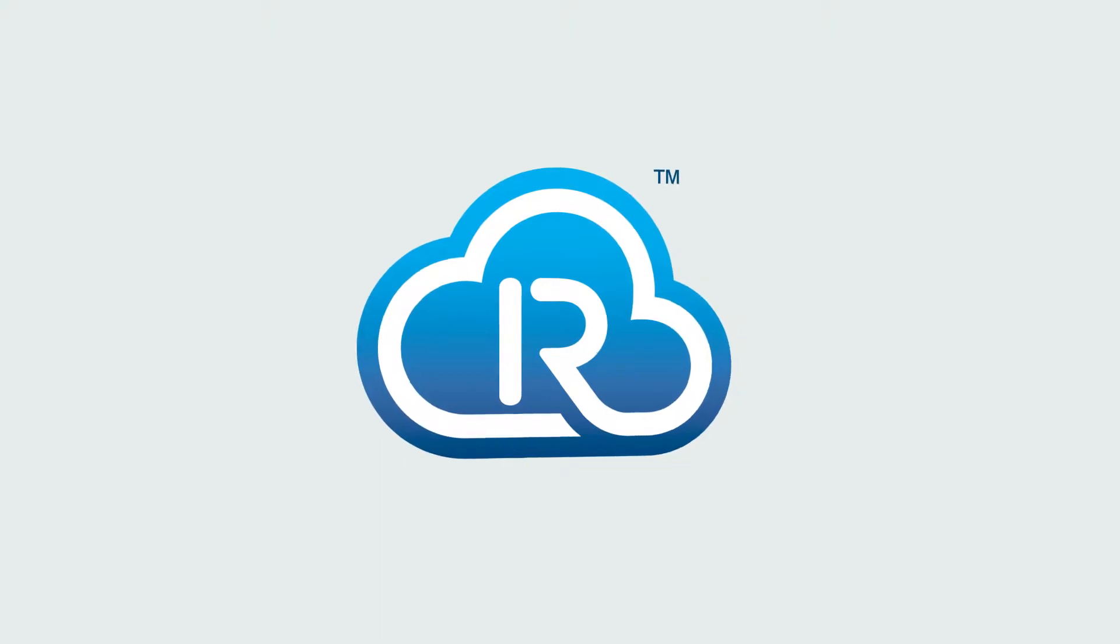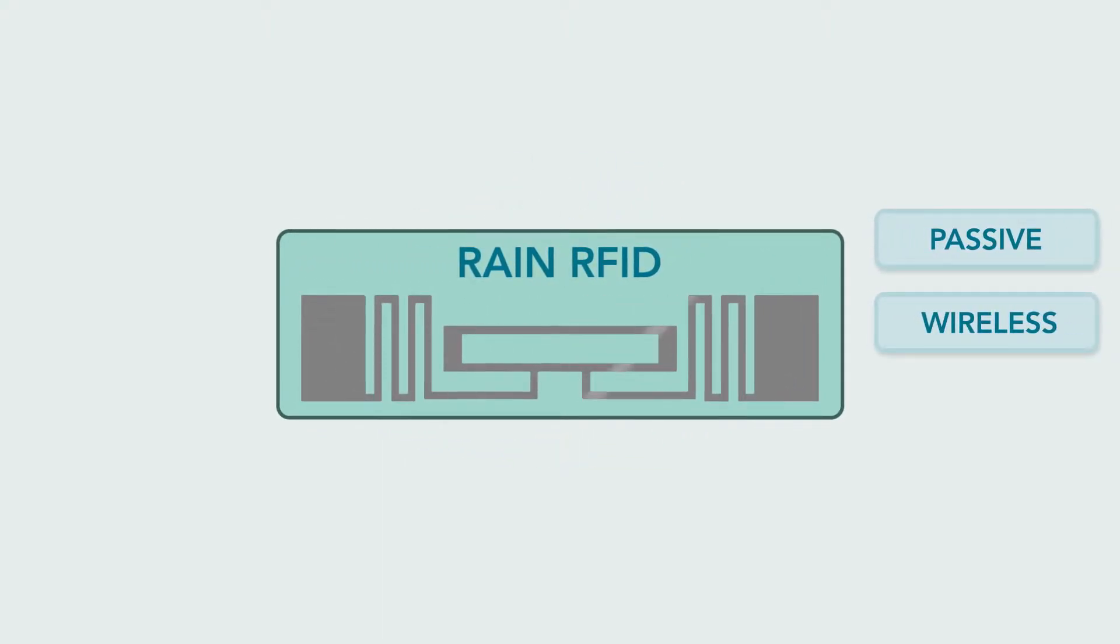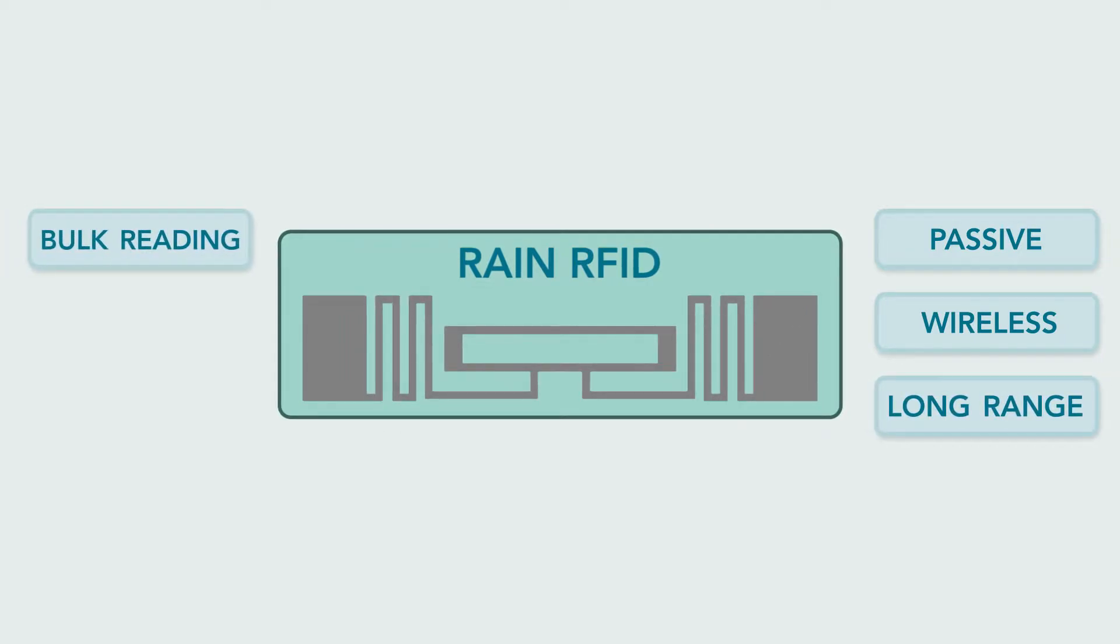RAIN RFID enables Industry 4.0. The passive wireless technology has a range of several meters and bulk reading capability, with no battery required.